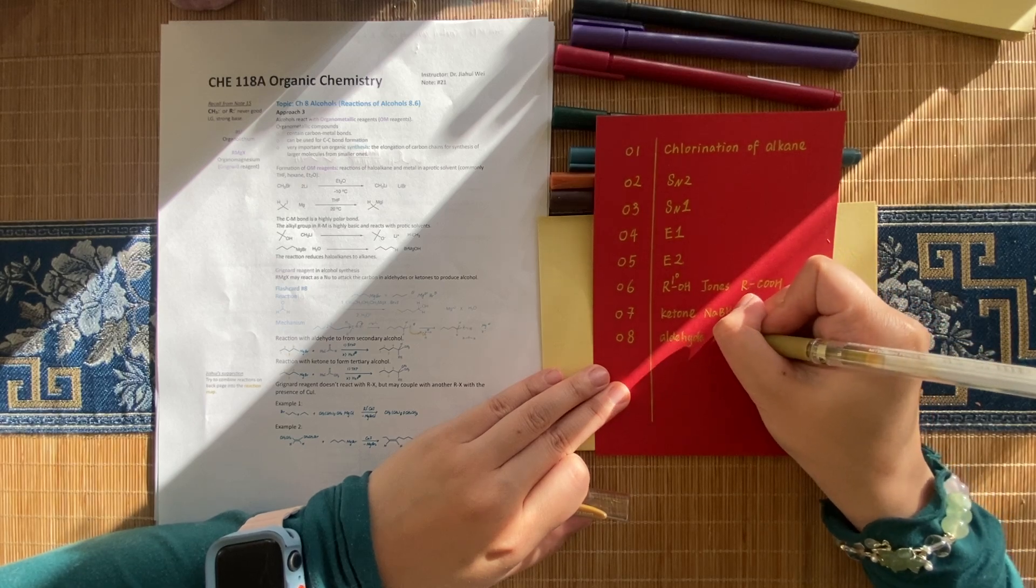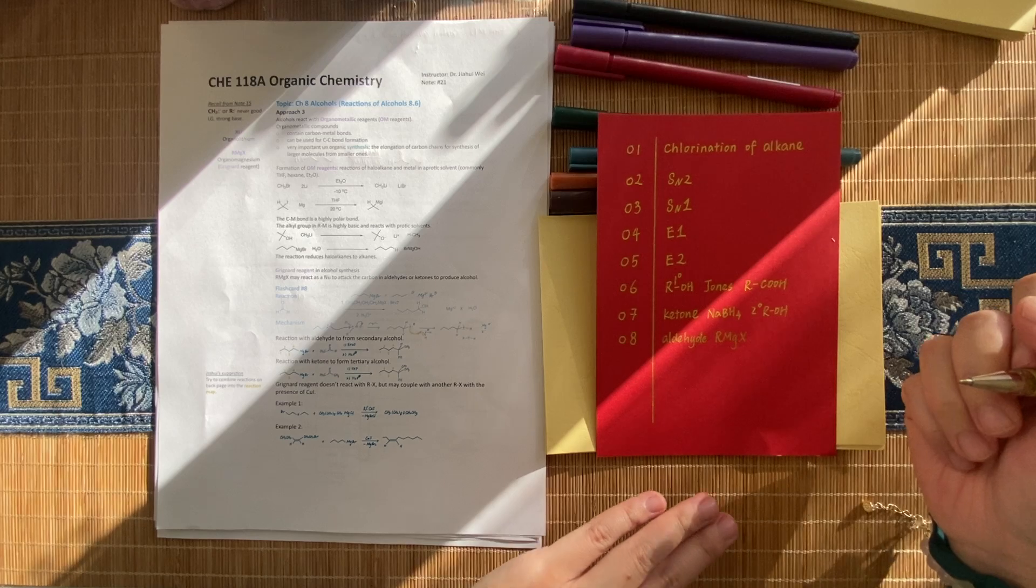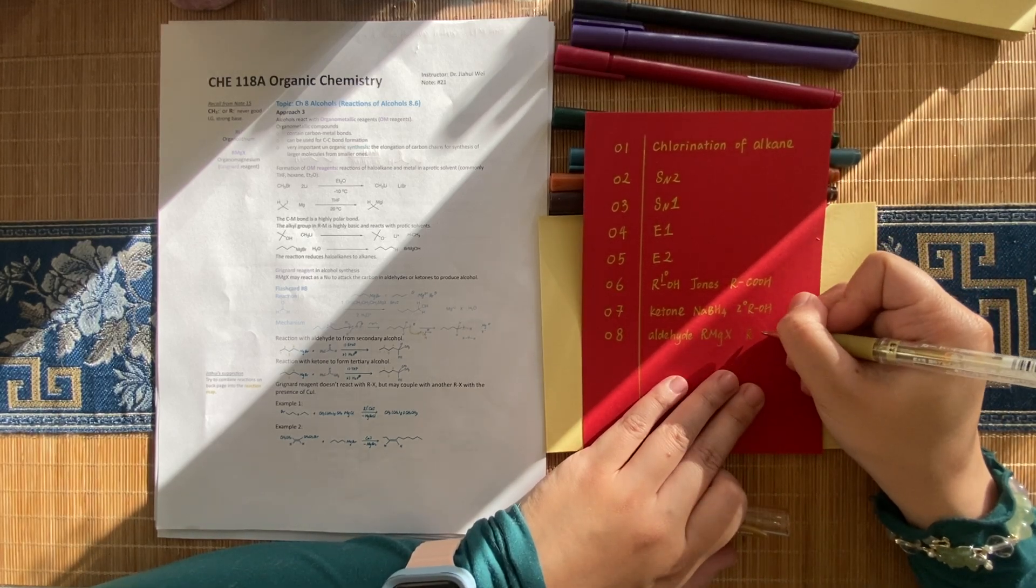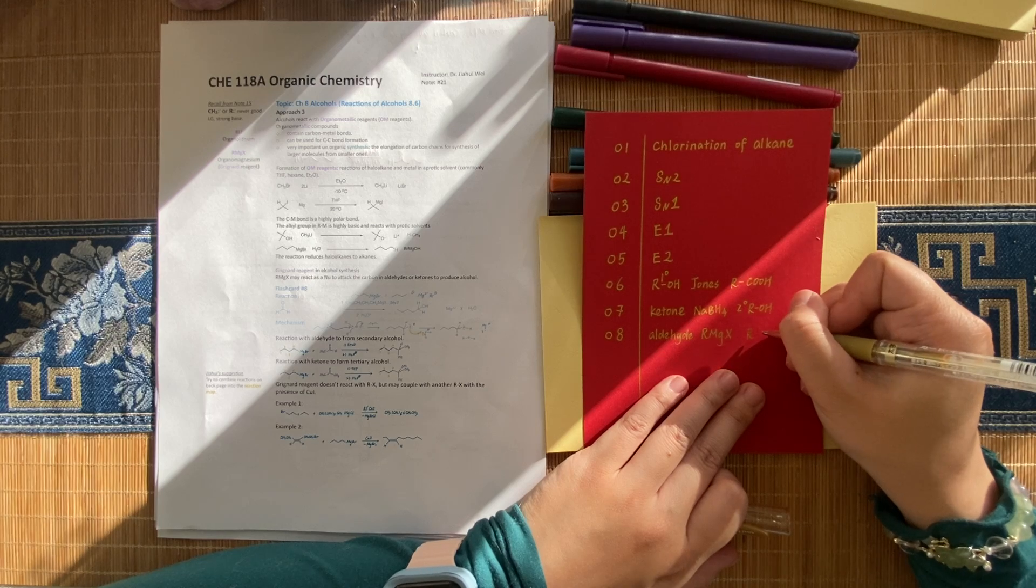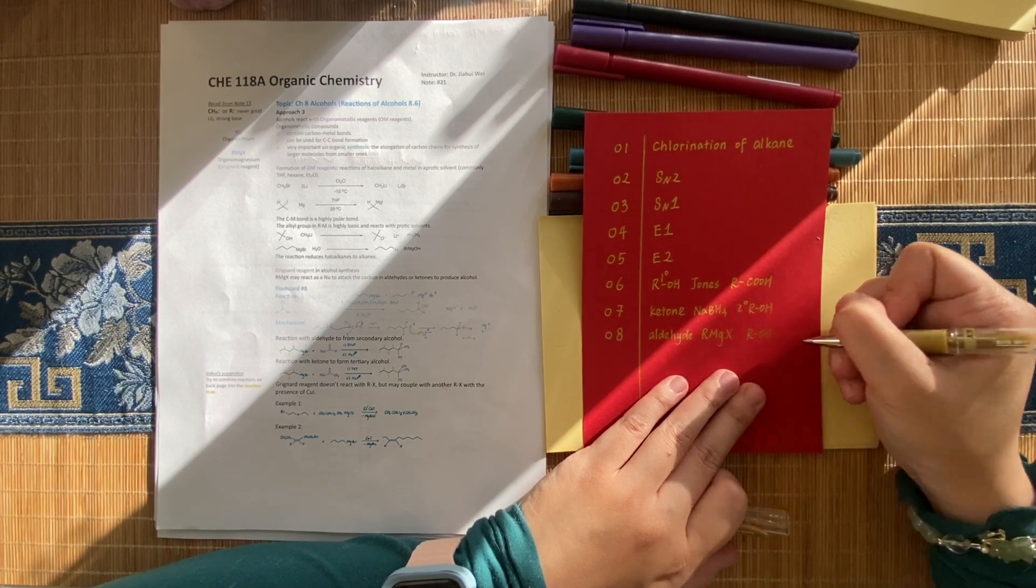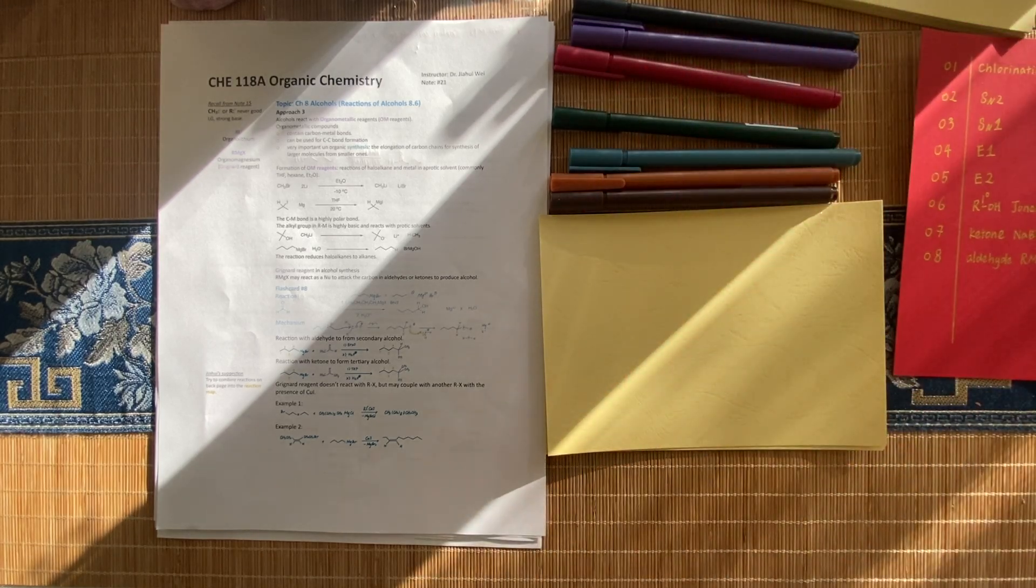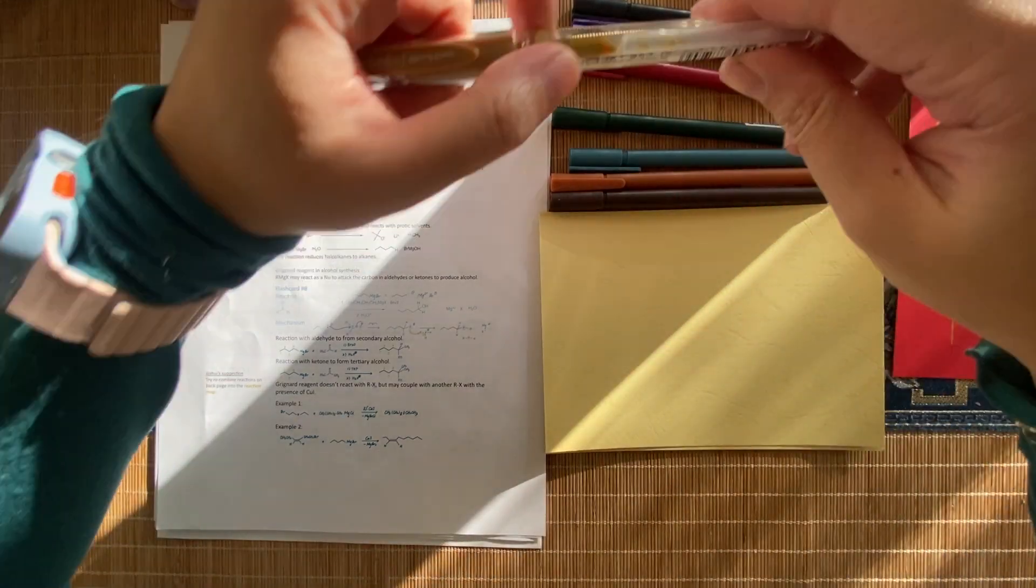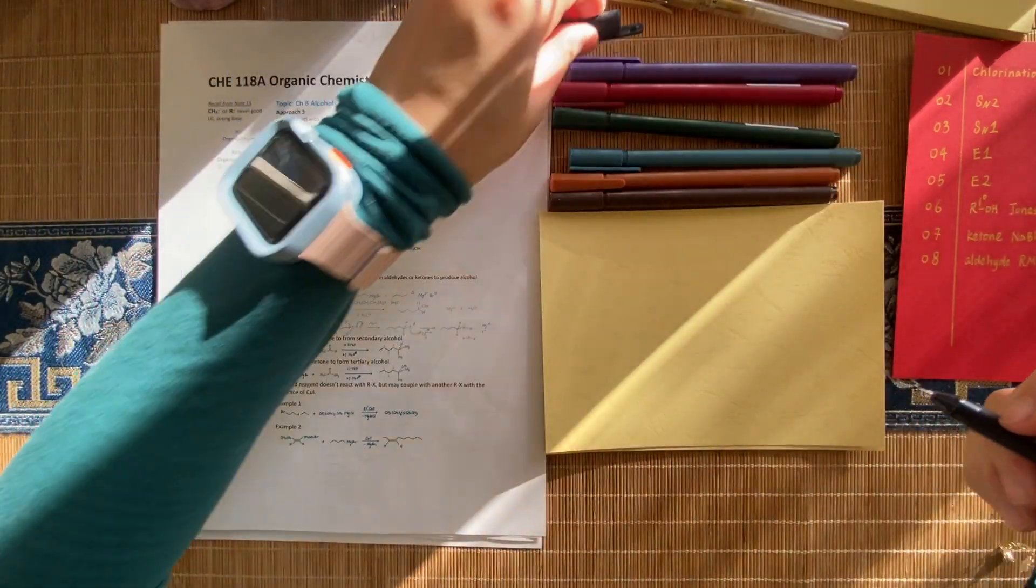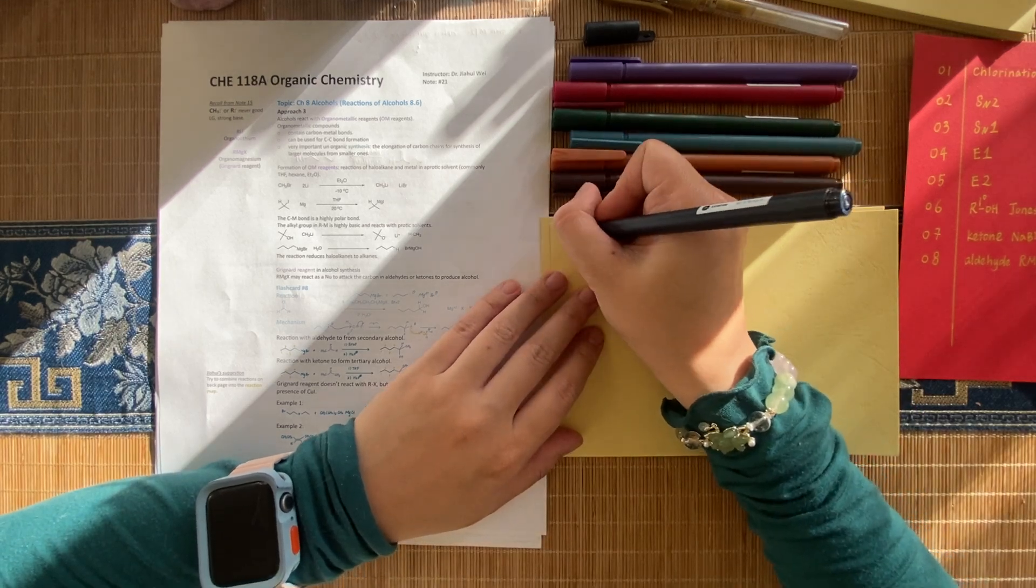Grignard, aldehyde form, and it's going to reduce with ROH. All right, this one we're actually going to do two. I know people may get confused on this. Let's do flashcard.